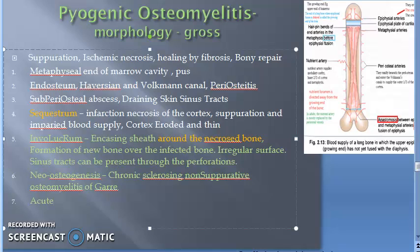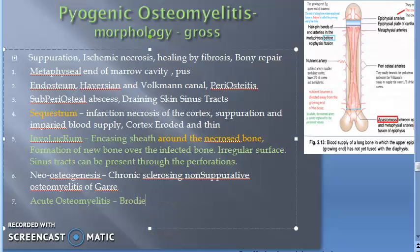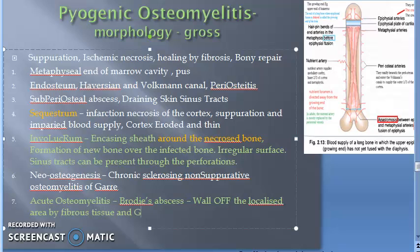In acute osteomyelitis, the entire infection can be localized, and there will be fibrous tissue and granulation tissue surrounding it with no sinus tracts. This is called Brodie's Abscess, which is a very good outcome — the abscess is completely walled off and you may not even know there is an infection.